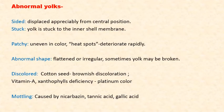Abnormalities in yolk: sometimes it can be sided, that is displaced from the center. Sometimes the yolk may be stuck to the inner shell membrane. It may be patchy, that is uneven in color, or have heat spots which will deteriorate fast. There can be abnormal shape — flattened or irregular. Sometimes the yolk may be broken. Discoloration may be due to cottonseed causing brownish discoloration, or vitamin A and xanthophyll deficiency may cause a pale color. Mottling can be caused by nicarbazin, tannic acid, or gallic acid.